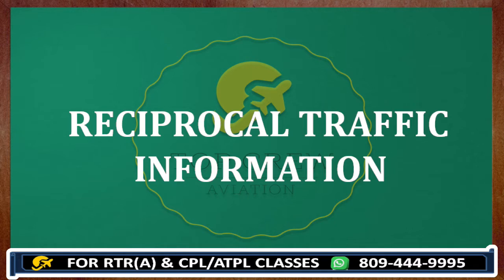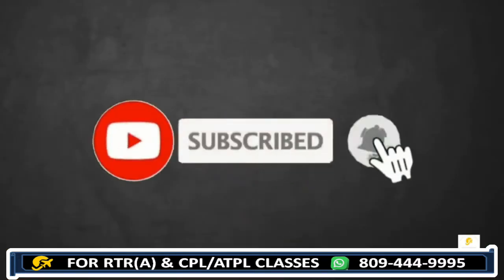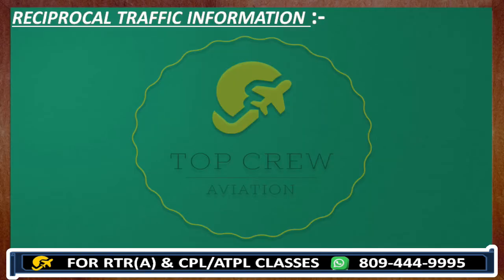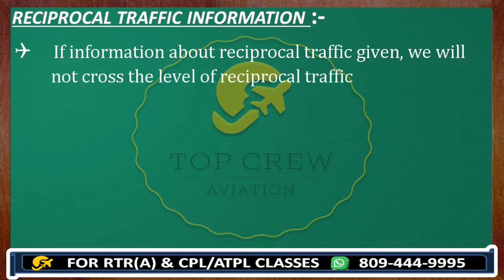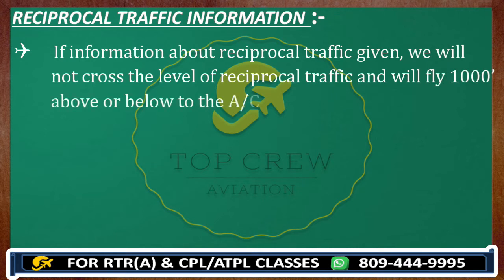Let's discuss with an example. Don't forget to subscribe and press the bell icon to get all upcoming videos. About reciprocal traffic: in case information about reciprocal traffic is given, we will not cross the level of reciprocal traffic and will fly 1000 feet above or below the aircraft till clear of traffic. Once that traffic is clear, we can ask for further climb or further descent as per our filed flight plan or current requirement.